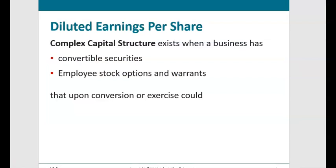A complex capital structure is one where a company has convertible securities or employee stock options and warrants — securities that can be converted at the holder's discretion into shares of common stock. Common stockholders ask: if all of those other securities did get converted, what would that do to my earnings per share?